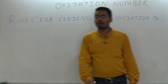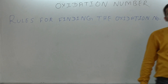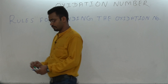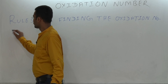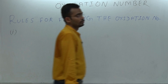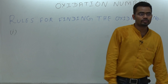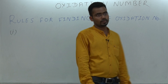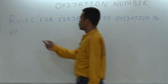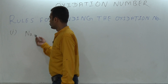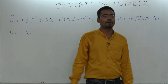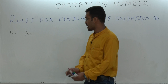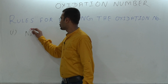Rules for finding the oxidation number. First, write down: an element has zero oxidation number in its natural form, like sodium. For example, sodium in its natural form — what is the oxidation state of sodium? Zero. It has zero oxidation state.